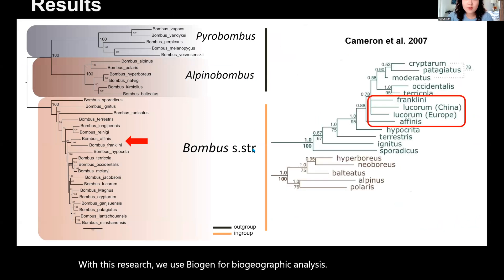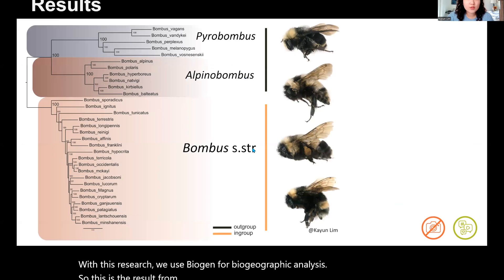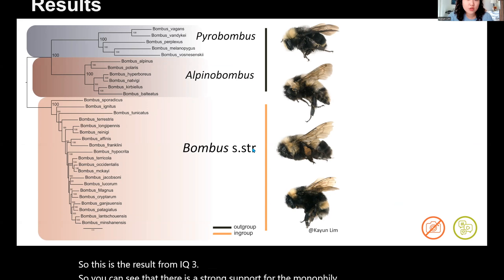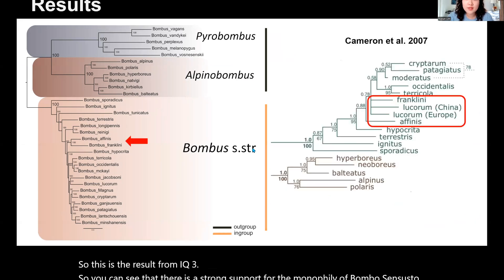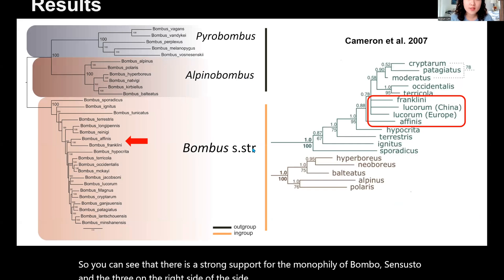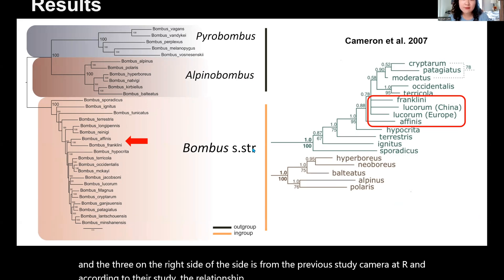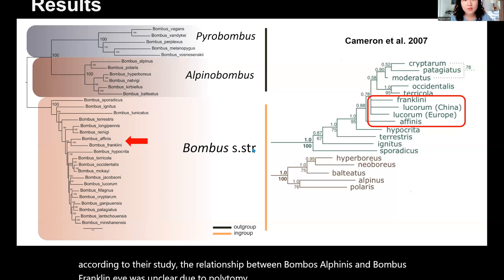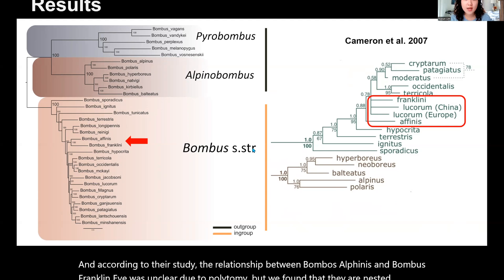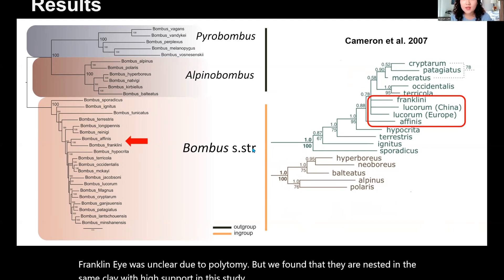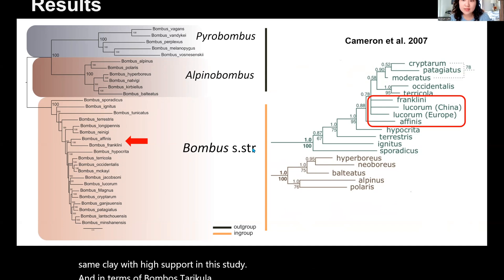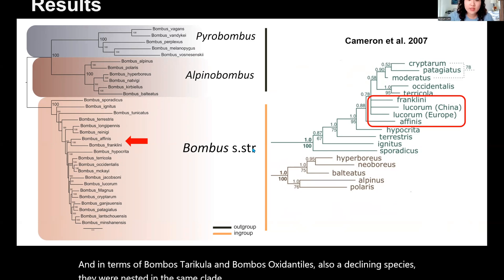This is the result from IQtree2. You can see that there is strong support for the monophyly of Bombus sensus stricto. The tree on the right side of the slide is from the previous study by Cameron et al. According to their study, the relationship between Bombus affinis and Bombus franklinii was unclear due to polytomy. But we found that they are nested in the same clade with high support in this study. And in terms of Bombus terricola and Bombus occidentalis, also declining species, they were nested in the same clade as previously suggested.